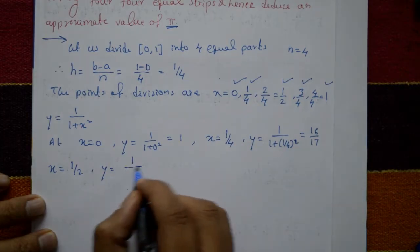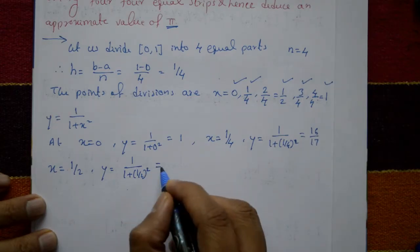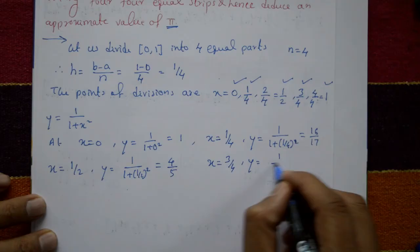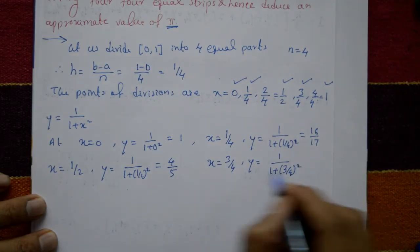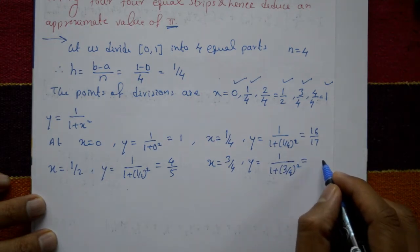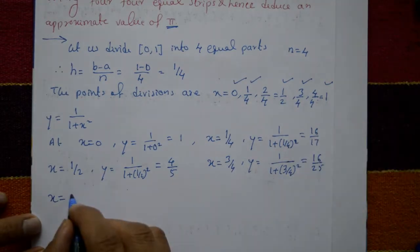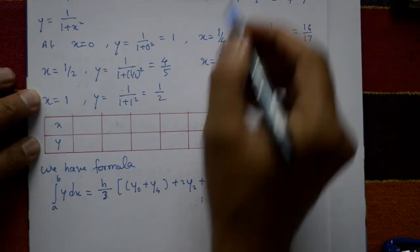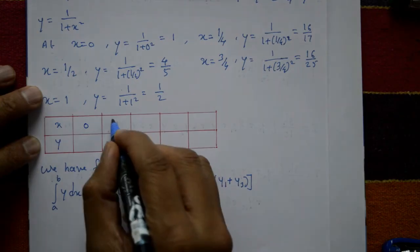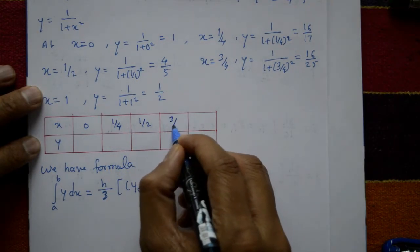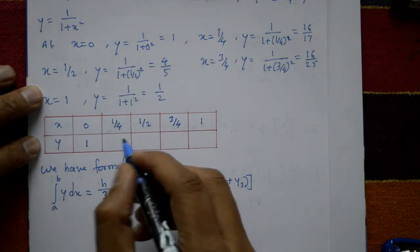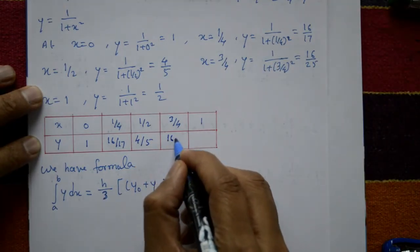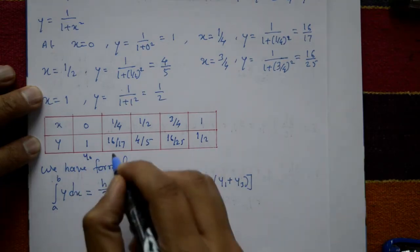At x = 1/2: y₂ = 1/(1+(1/2)²) = 4/5. At x = 3/4: y₃ = 1/(1+(3/4)²) = 16/25. At x = 1: y₄ = 1/(1+1²) = 1/2. So the y-values are y₀=1, y₁=16/17, y₂=4/5, y₃=16/25, y₄=1/2.